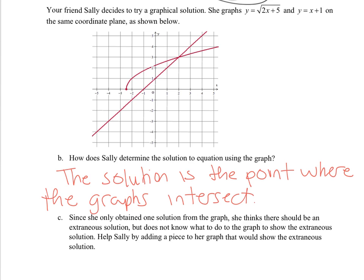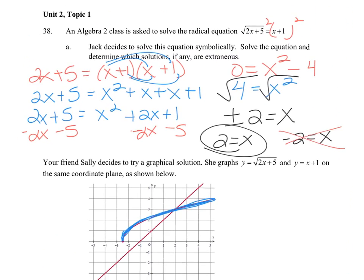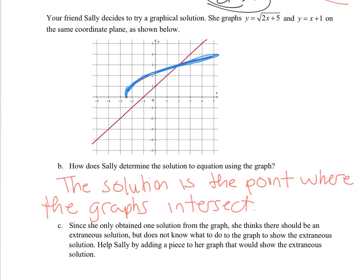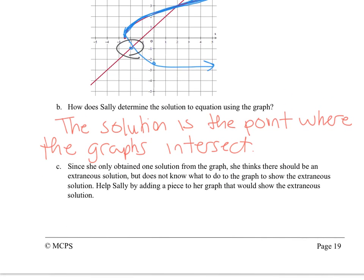So then for c, when we square both sides of the equation, it makes the square root function, which is this one, into – if we look up here, I'm going to graph it as a parabola. So that's here, approximately here, and it goes this way. So the extraneous solution is the point down here where they originally did not intersect.